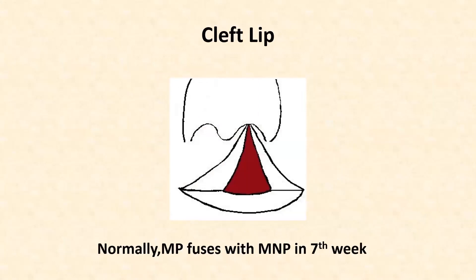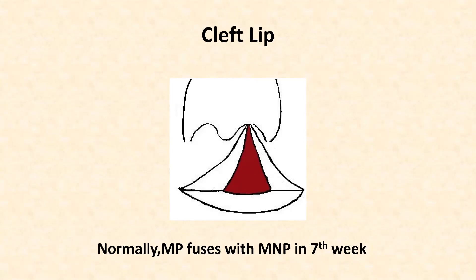As we can see in the figure, the maxillary process does not fuse with the medial nasal process. This gap or split portion in the upper lip, which may be unilateral or bilateral, is called cleft lip. The reason for this is that the maxillary process has not fused properly with the median nasal process. Normally, this fusion occurs by the sixth week of intrauterine life.